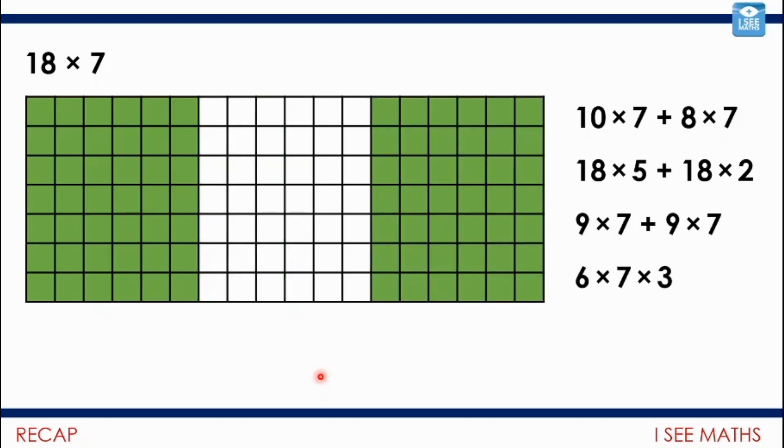Equally, it could be that you break up the 18, rather than into 2 pieces, into 3 pieces. You could have 18 into 3 6s. So 6 times 7, 3 times. That's another way. So 3 lots of 42. So different options that we can have. And hopefully you're building that flexibility.